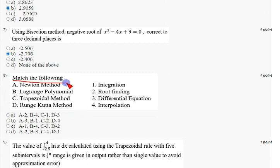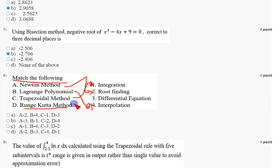Coming to the eighth question — match the following. Newton's method is used for root finding. Lagrange's polynomial, as seen in a previous question, is for interpolation. The trapezoidal rule is for integration. The Runge-Kutta method is for differential equations, which is option 3. So the answer is option A: A2, B4, C1, D3. Mark option A as the correct answer for the eighth question.